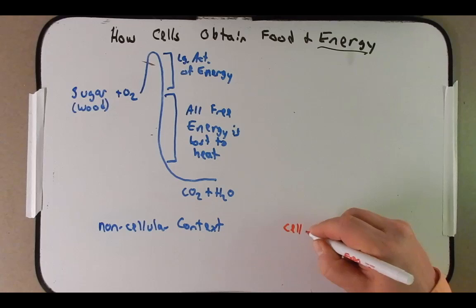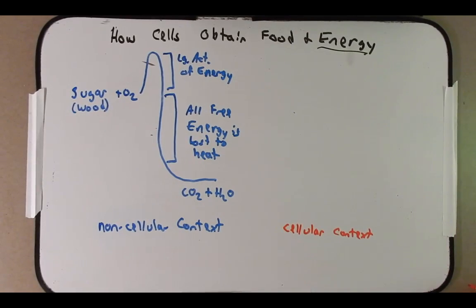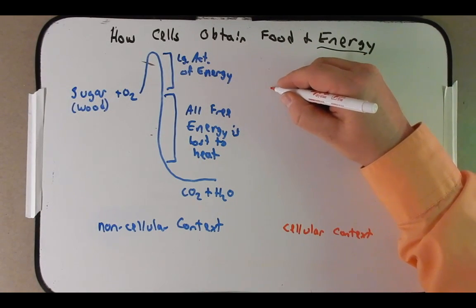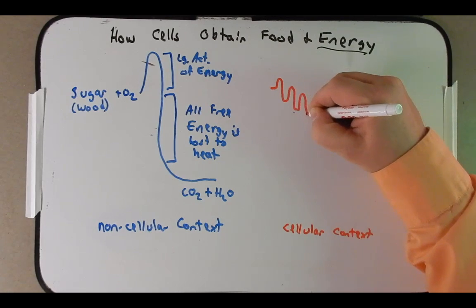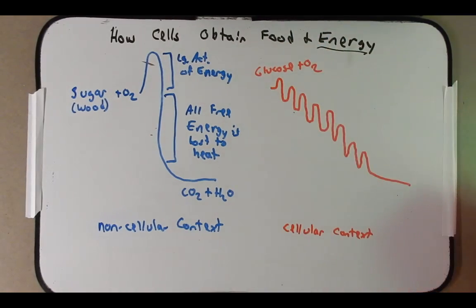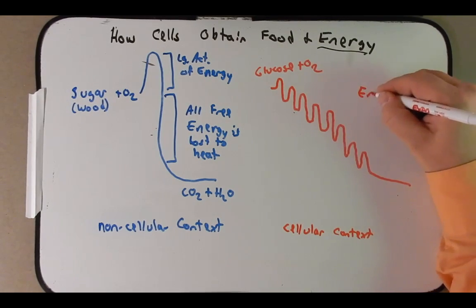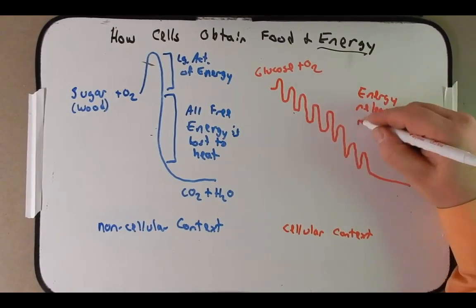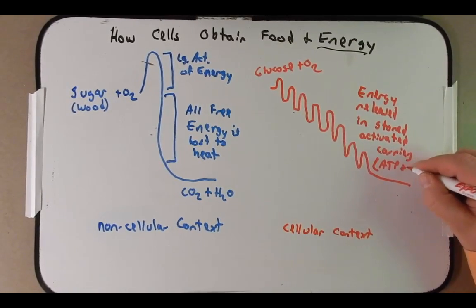So let's talk about a cellular context. We want to make sure that when we use that sugar we can save some of that energy, and it's not going to be very helpful if this energy of activation is huge. What happens in the breaking down of sugar through various steps is there are many smaller reactions, each with their own level of activation energy. You still start off with glucose and it still needs oxygen, but it's less of an initial energy investment. And energy in this process is stored in activated carriers like ATP and NADH. We still generate CO2 and water.